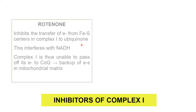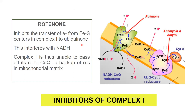The electron transport chain is made up of many complexes in the inner membrane of the mitochondria — complex one, two, three, and four. Their function is to take electrons from the reducing equivalents NADH and FADH2 and pump protons from the matrix into the intermembrane space, which are then channeled back into the matrix via the ATP synthase complex. Inhibition of any complex would lead to inhibition of ADP to ATP conversion.